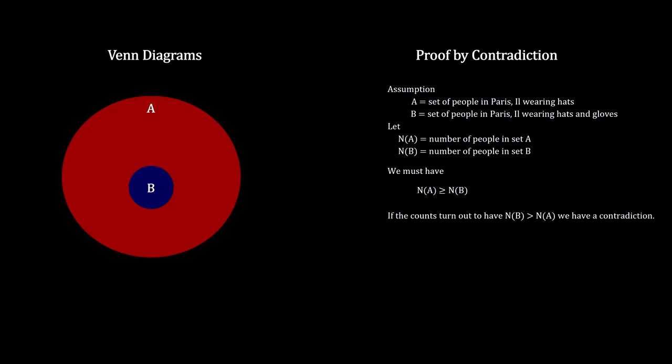A violation of the basic assumption. The assumption that they are counting people in the same town on the same day must be false. For example, this violation could happen if the count for hats was indeed taken in Paris, Illinois, but the count for hats and gloves was taken in Paris, France.